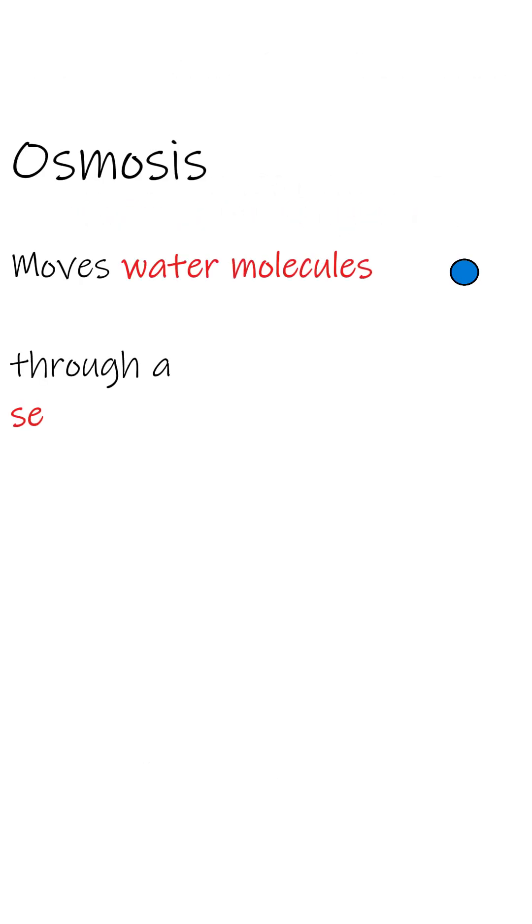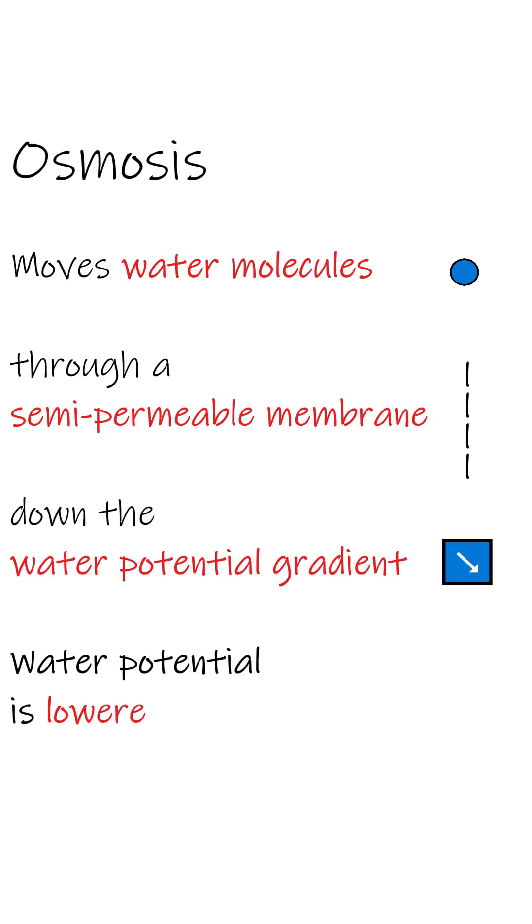Osmosis is the movement of water through a semi-permeable membrane down the water potential gradient, and the water potential is lowered by adding solutes.